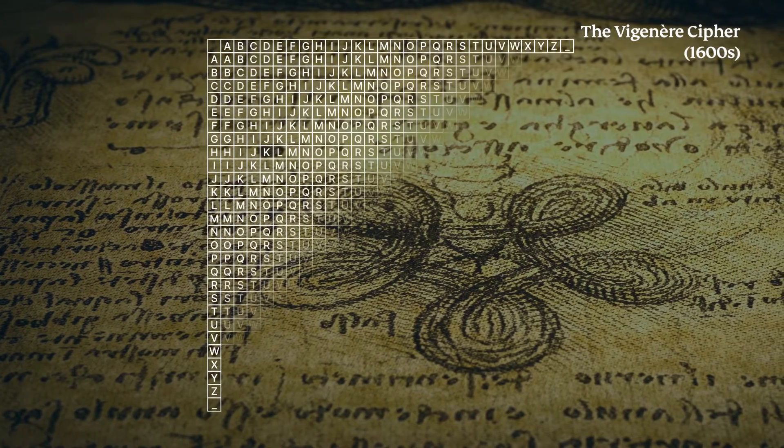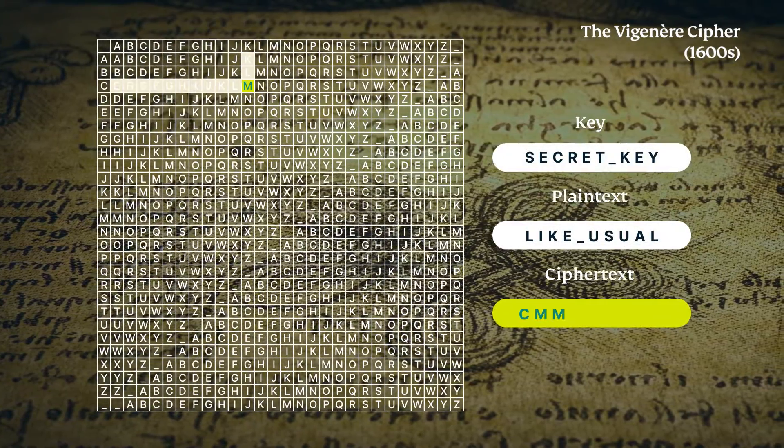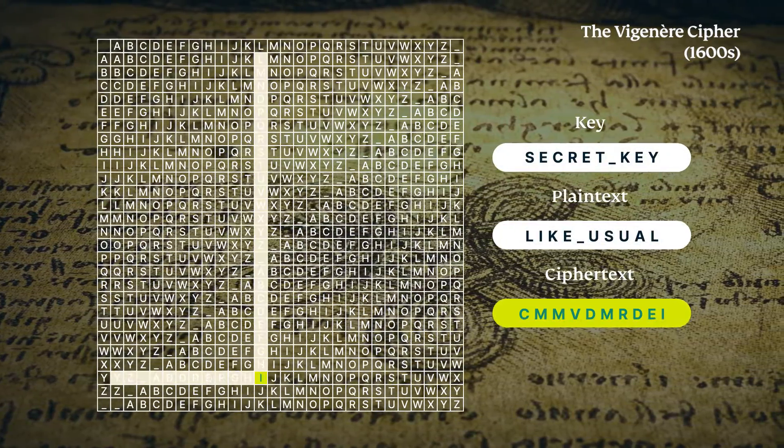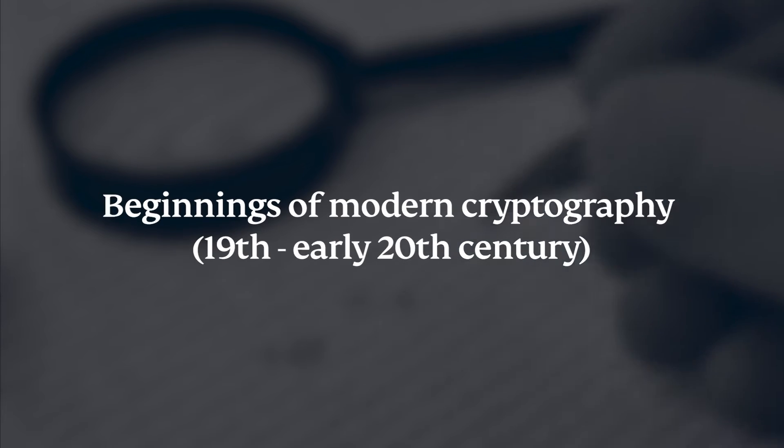The Vigenère cipher by Blaise de Vigenère applied multiple Caesar ciphers with a keyword, improving message security. Beginnings of modern cryptography.